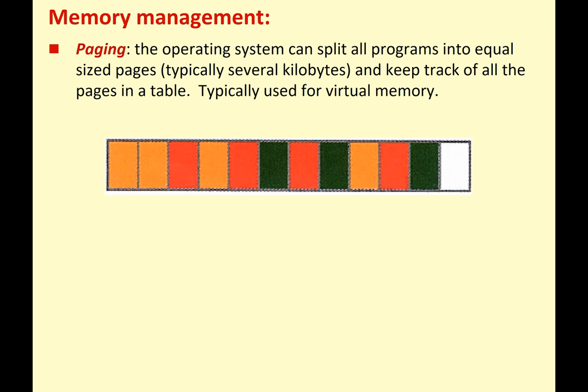Paging, however, is a different system. The operating system can split all programs into equally sized pages, typically several kilobytes, and keeps track of all these pages in a table. This is what we use for virtual memory. Virtual memory is when you start running out of physical RAM, and your operating system takes a part of your secondary storage — whether that's your SSD or hard disk drive — and treats it as if it's RAM, storing running programs on the secondary storage and acting like it's RAM to keep your programs all running. However, virtual memory is slower than using actual physical RAM, so if you're using too much virtual memory it can slow down your system.